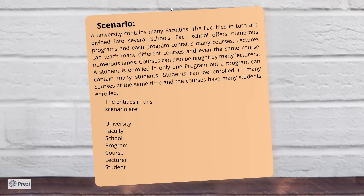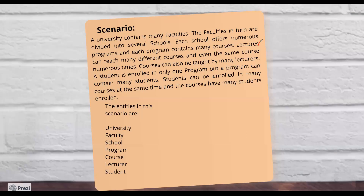Students only enter one program, but a program can contain many students. Students can be enrolled in many courses, and courses can have many students enrolled in them.